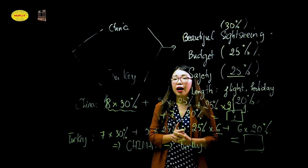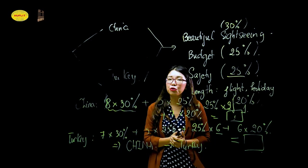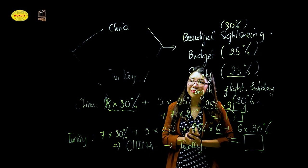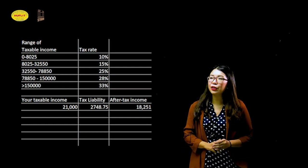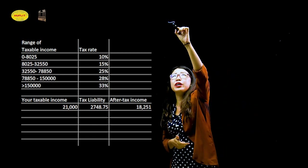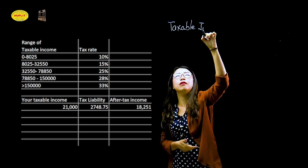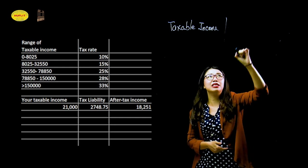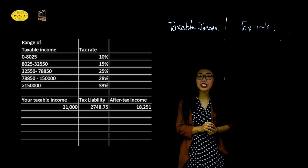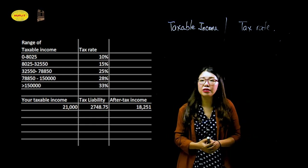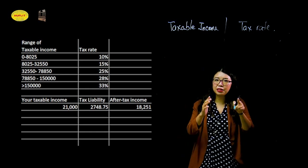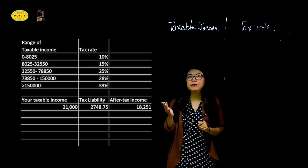That's the example for the concept. Now I want to show you a practical exercise. Please open the Excel file. You will see a table where the first column is taxable income and the second column is the tax rate. This is personal taxable income — calculated based on the money people earn and the tax they need to pay to the government.